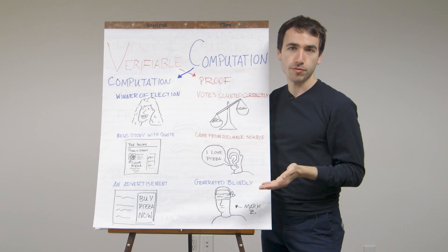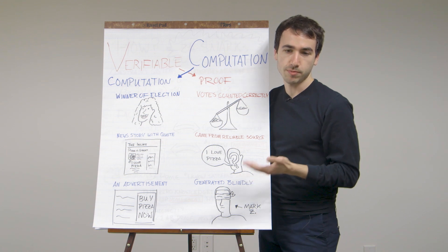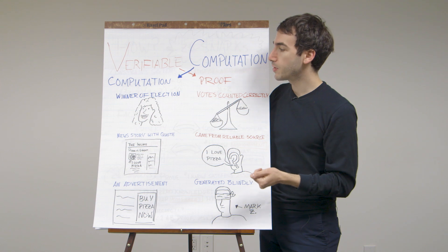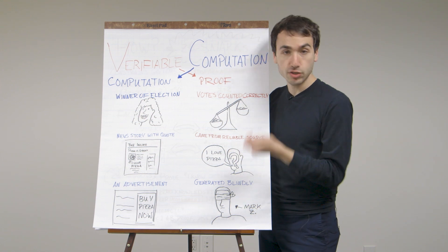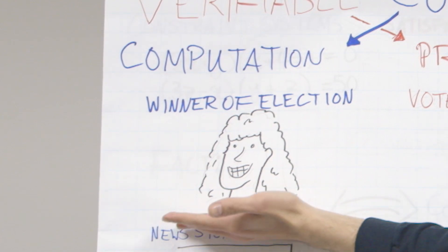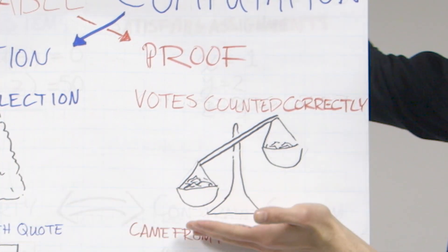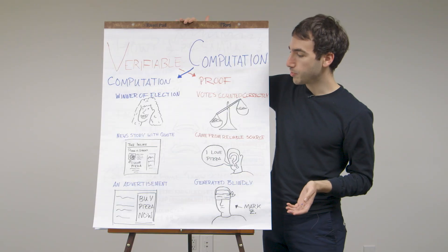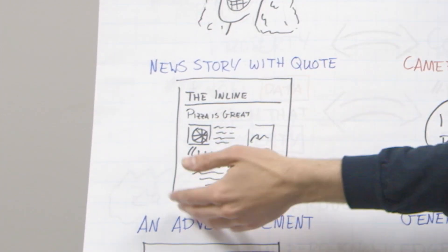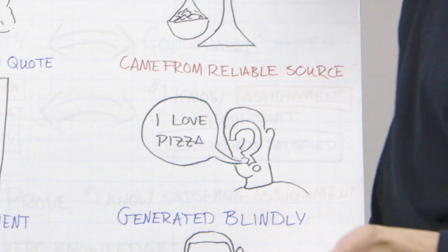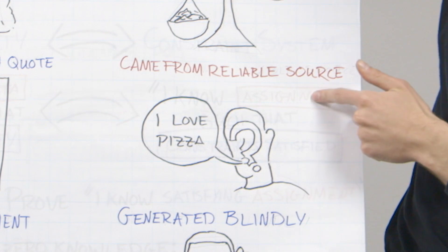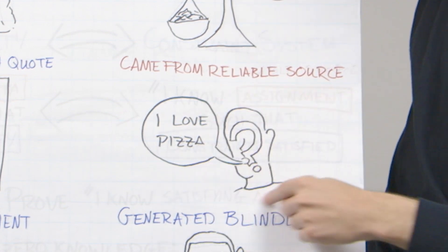It's probably helpful to go over a few examples of what exactly we might do with verifiable computation. As a first example, imagine an election where the government is going to compute the winner and prove that the votes were all counted correctly. As another example, you can imagine computing a news story with a quote, along with a proof that the quote came from a reliable source while keeping the identity of the source a secret.